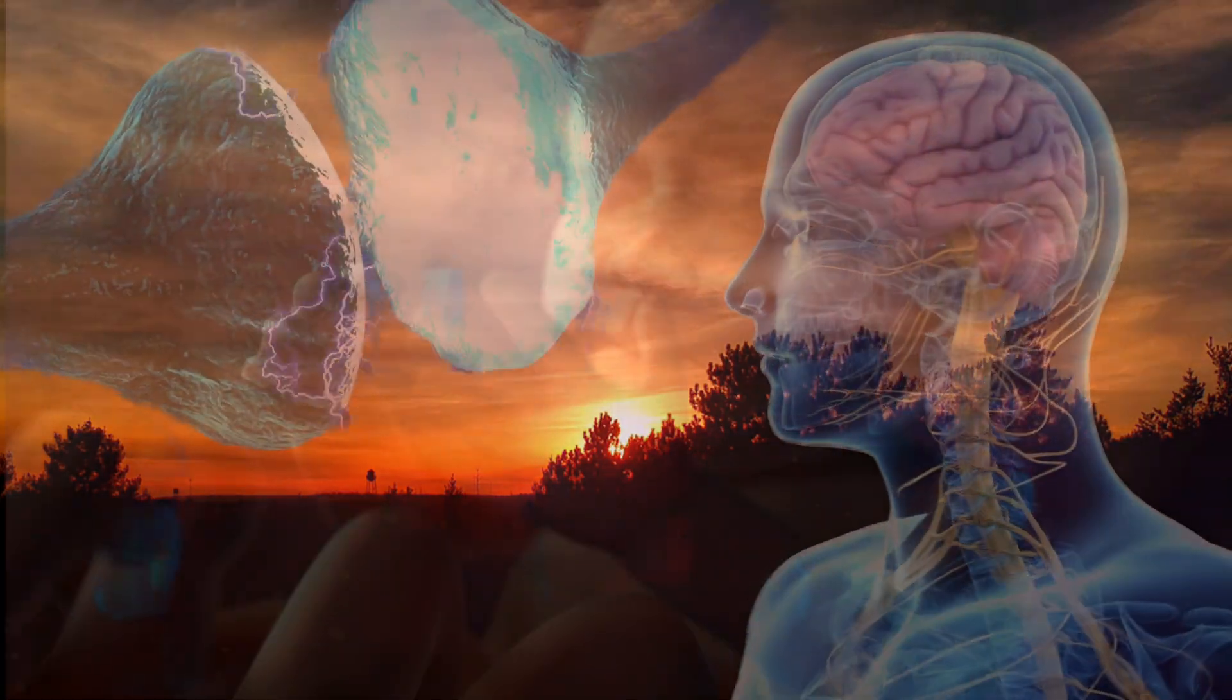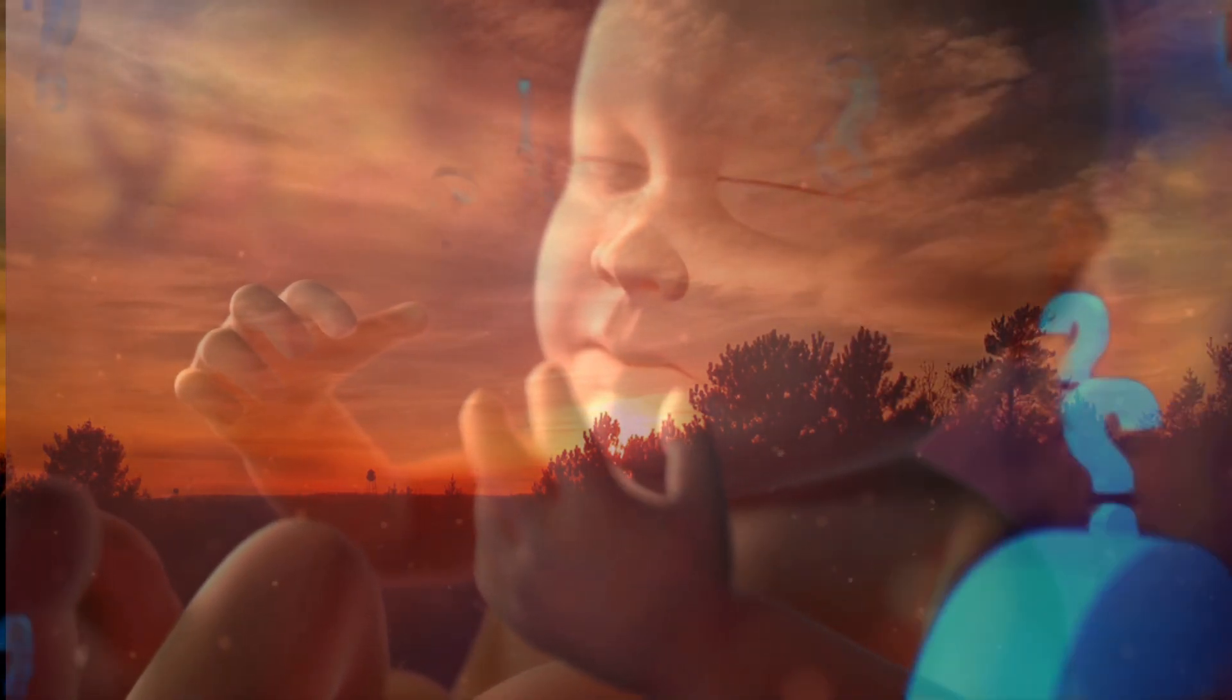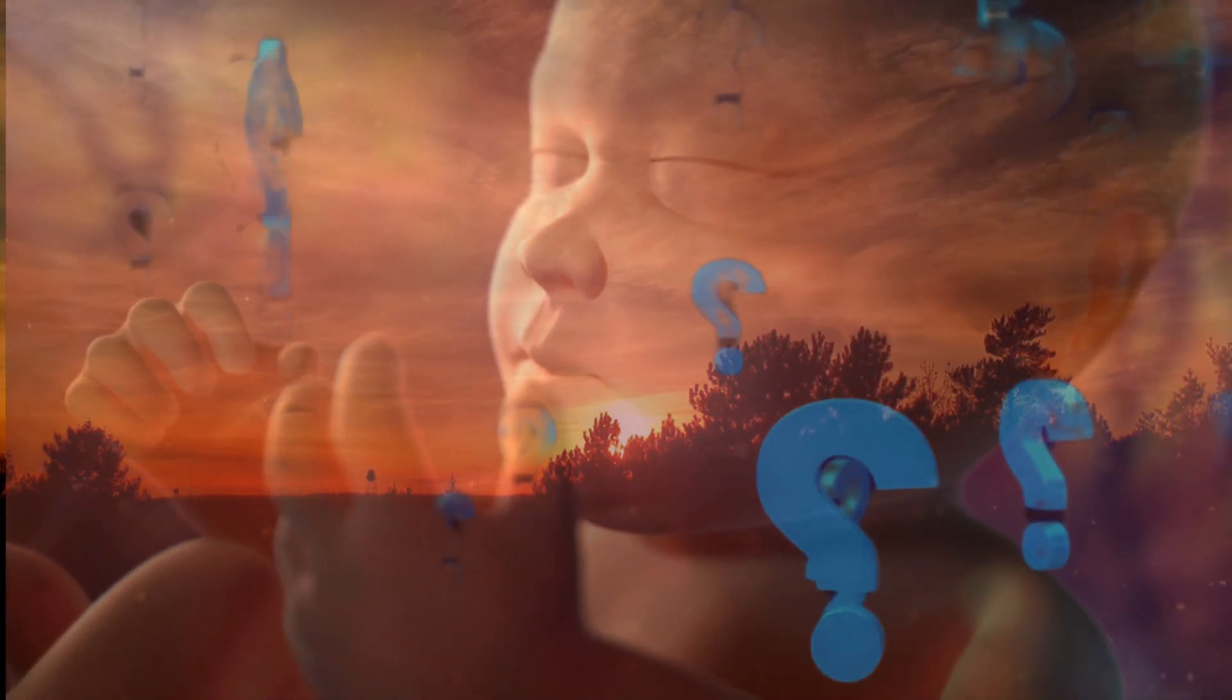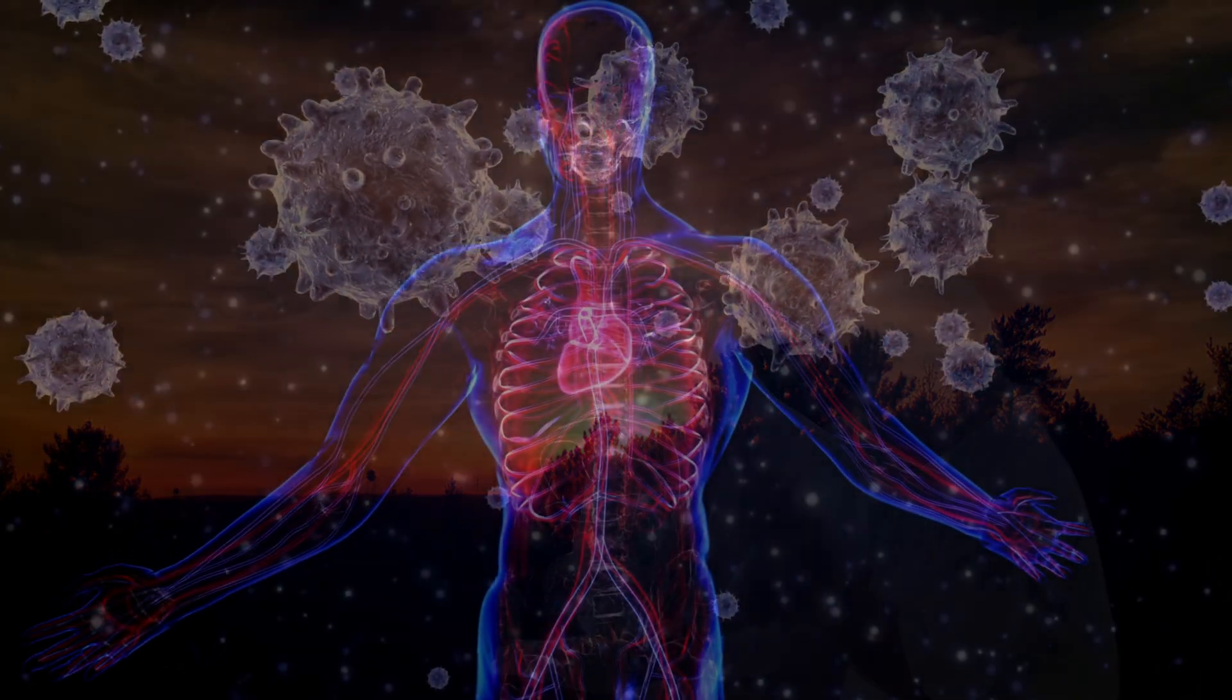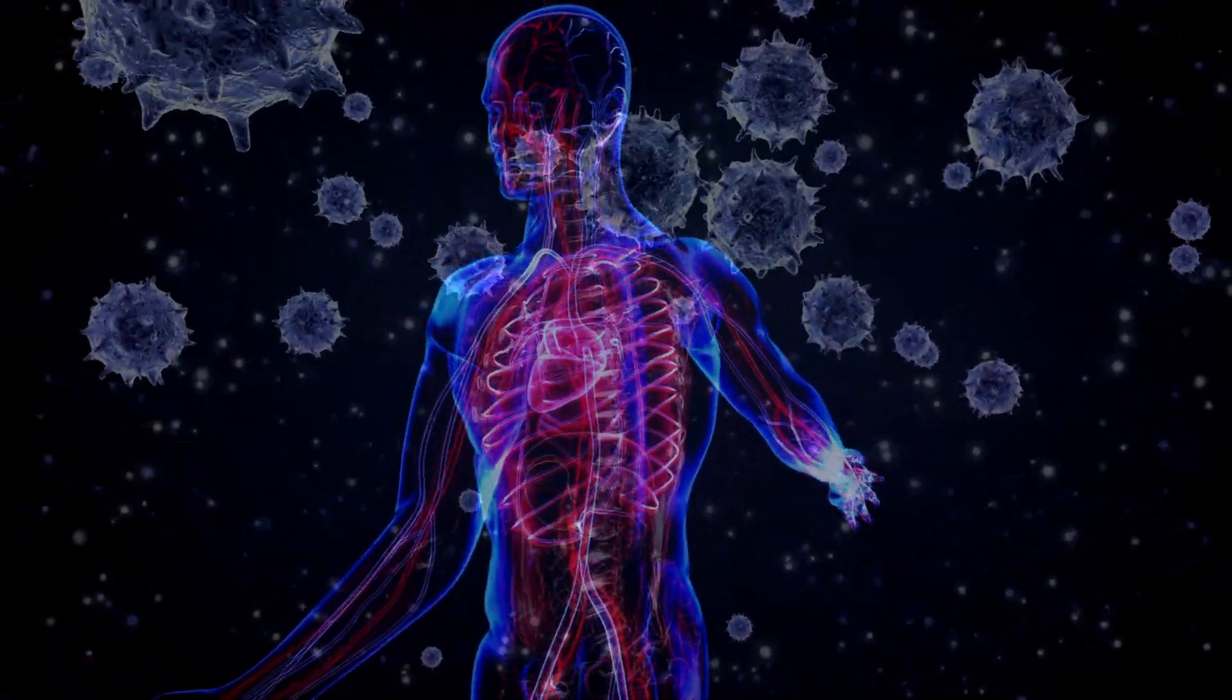But embryonic stem cells have their downsides. In addition to the ethical issues associated with their derivation from human embryos, a problem in general with transplanted organs and tissues is rejection, or attack by the body's immune system, where it senses cells from other people or sources as a threat.